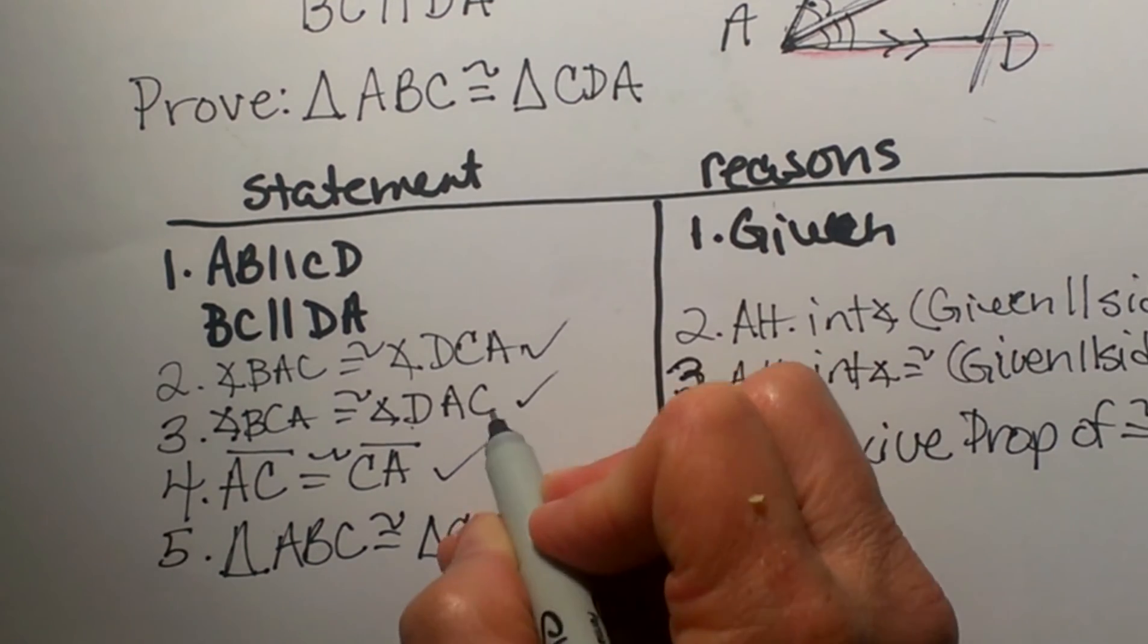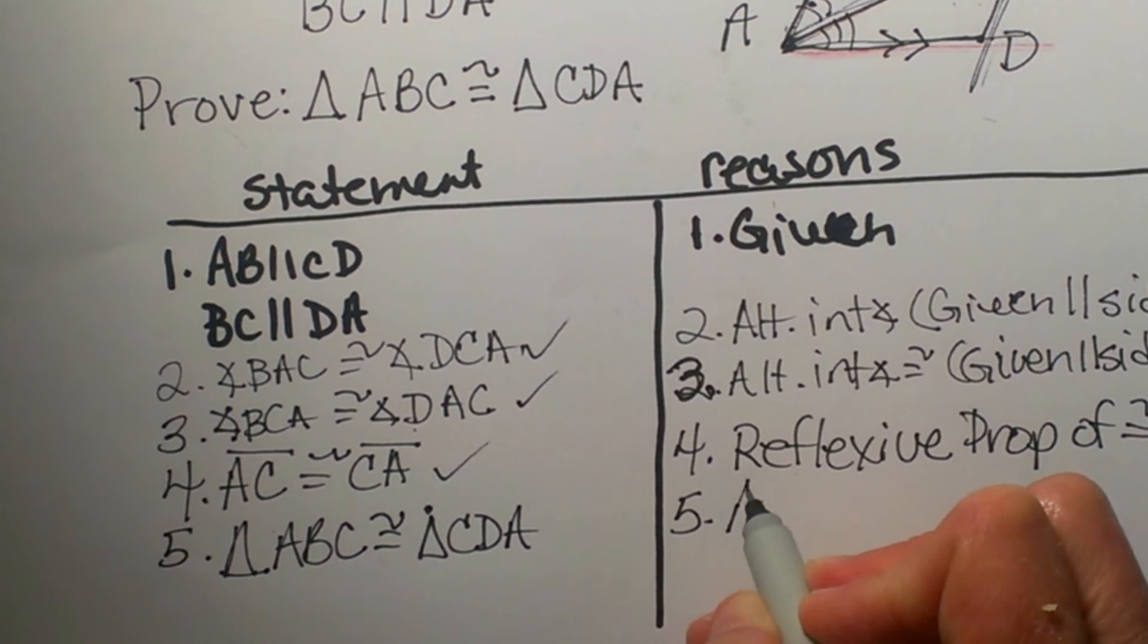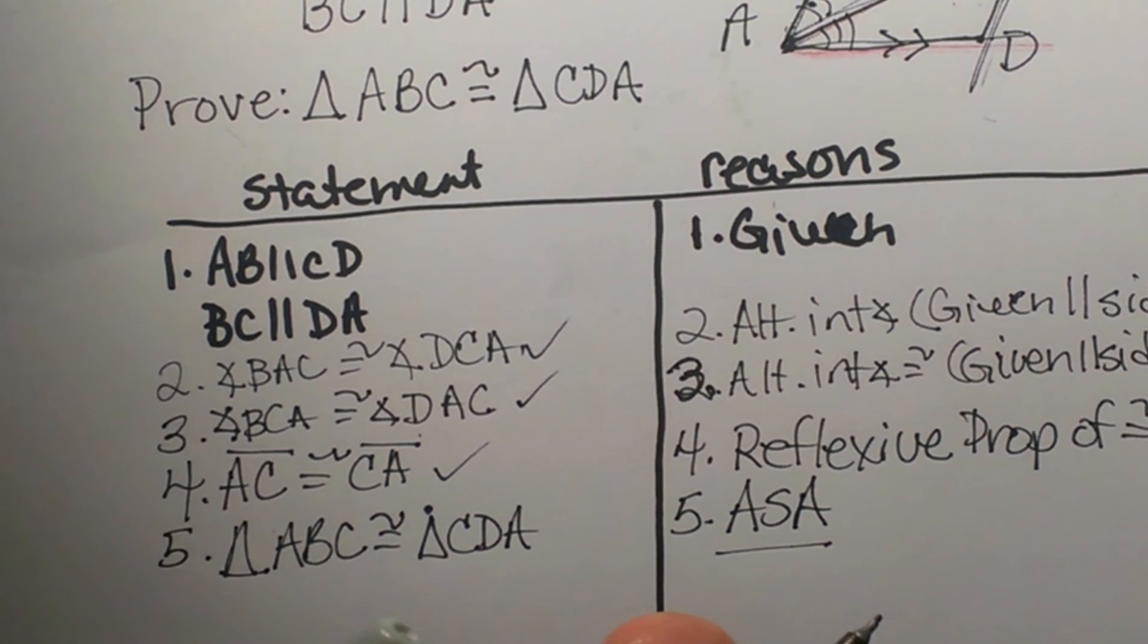Triangle ABC is congruent to triangle CDA. How do we know that? Well we have the three corresponding parts and we use the angle side angle postulate. And that is how you prove it. So there you go. That is how you do an angle side angle proof.